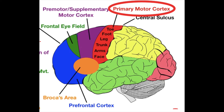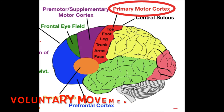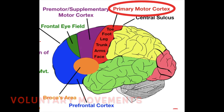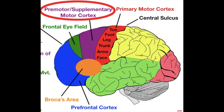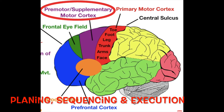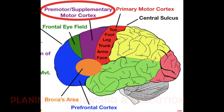The primary motor cortex deals with voluntary movement. Then number two, the motor association cortex — which includes your pre-motor cortex and supplementary motor cortex — deals with planning, sequencing, and executing your movements.